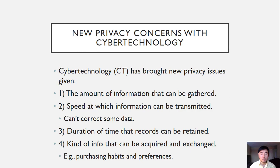One factor is the amount of information that can be gathered. With things like the internet, the amount of information that can be gathered about our personal lives — such as on Facebook, through email, bank account information, tax information — the sheer amount of information that can be gathered online and potentially by someone who shouldn't have it is much higher than before.